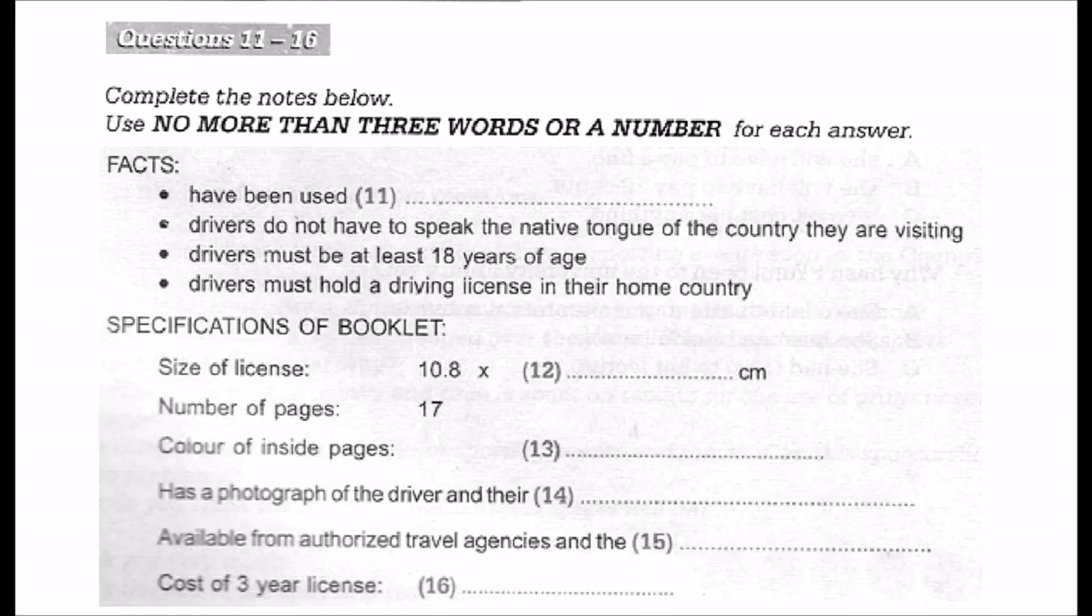The international driver's license can only be purchased from authorized travel associations in different countries, but it can also be ordered on the internet. The cost of course varies from country to country and for the term or the duration of the license. For example, a one-year license might cost approximately $40, whereas a three-year license costs double that. A five-year license will set you back about $100. Before the final part of the talk, look at questions 17 to 20.